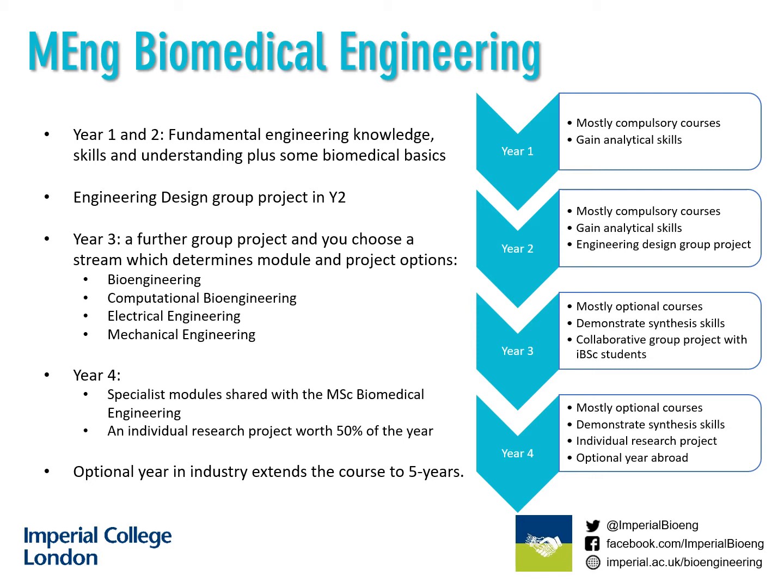The structure of the four-year biomedical engineering course has the first two years consisting of core engineering skills, ensuring that all students attain a similar standard in all aspects of biological science, computer skills, mechanical and electrical engineering and professional skills. As you reach the third year, you are given the option to choose which stream of the programme most interests you: bioengineering, computational bioengineering, electrical engineering or mechanical engineering. This will dictate to some extent what modules you study and what project options you may choose from.